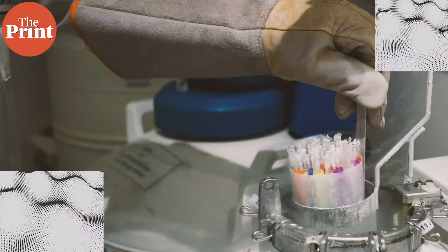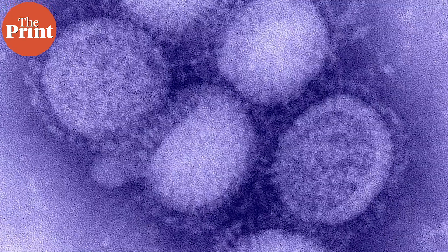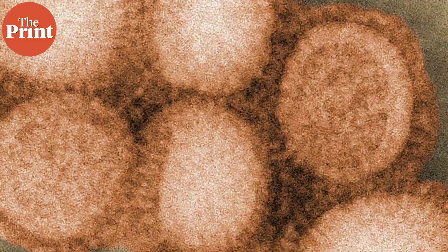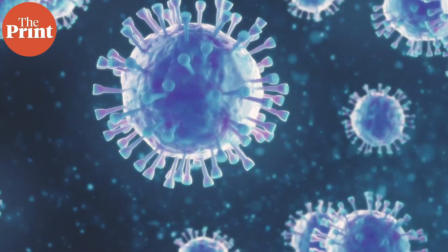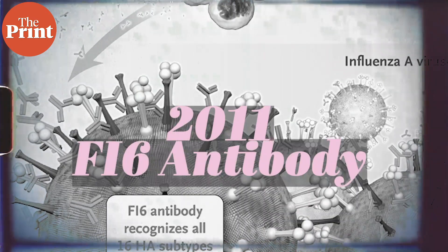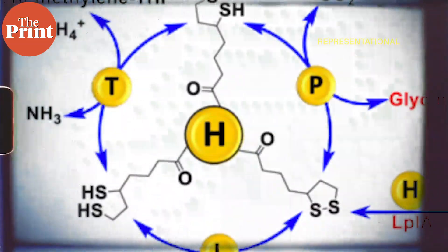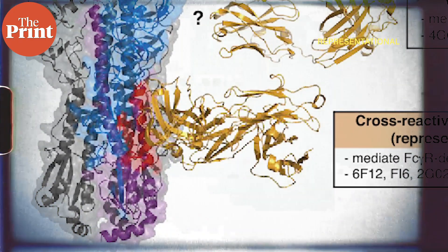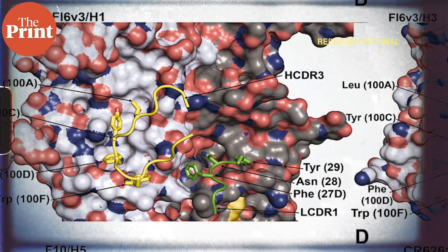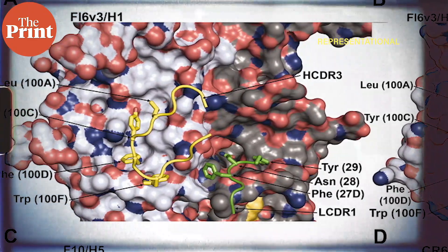Unlike coronaviruses, flu viruses mutate very quickly, requiring vaccinations to be updated every year. Fighting off the influenza virus for a global population is likely to be much more challenging than fighting off a coronavirus. However, there is some good news: in 2011, scientists discovered the FI6 antibody, which targets the H protein. The best part is that it binds to all known types of H protein and neutralizes them — meaning this antibody can theoretically fight off all known subtypes of the influenza A virus.